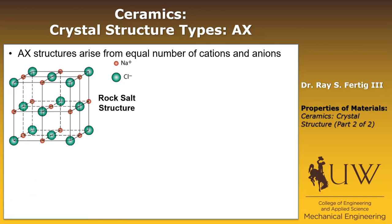The first is the rock salt structure, which is named after sodium chloride, which is salt. If you look at these green chlorine atoms, it looks like an FCC structure of chlorine with the sodium ions sitting at the edges and then the center of the structure. So that's one class of structure.